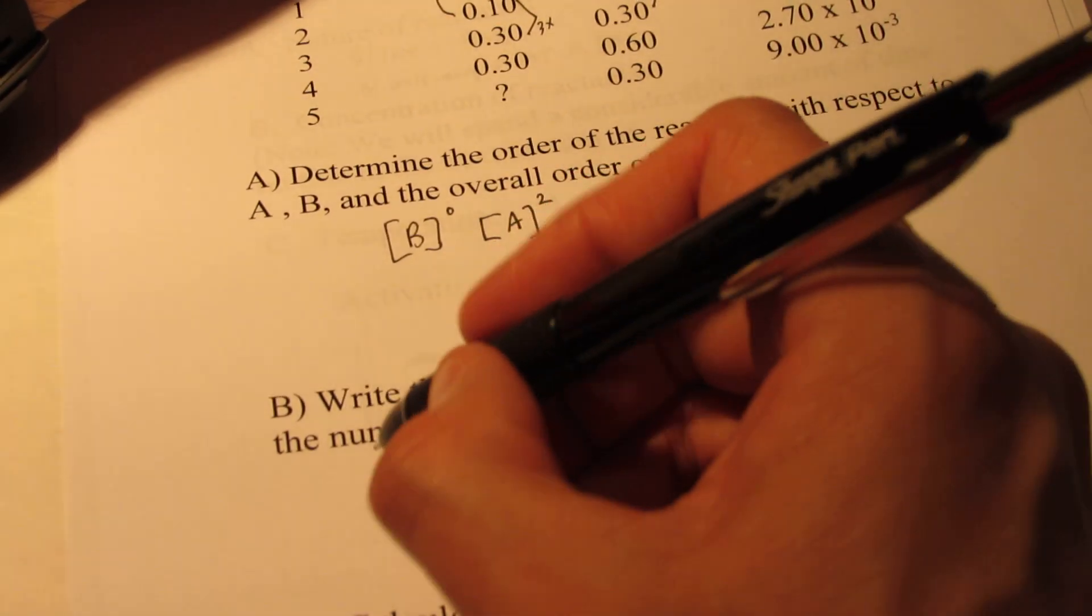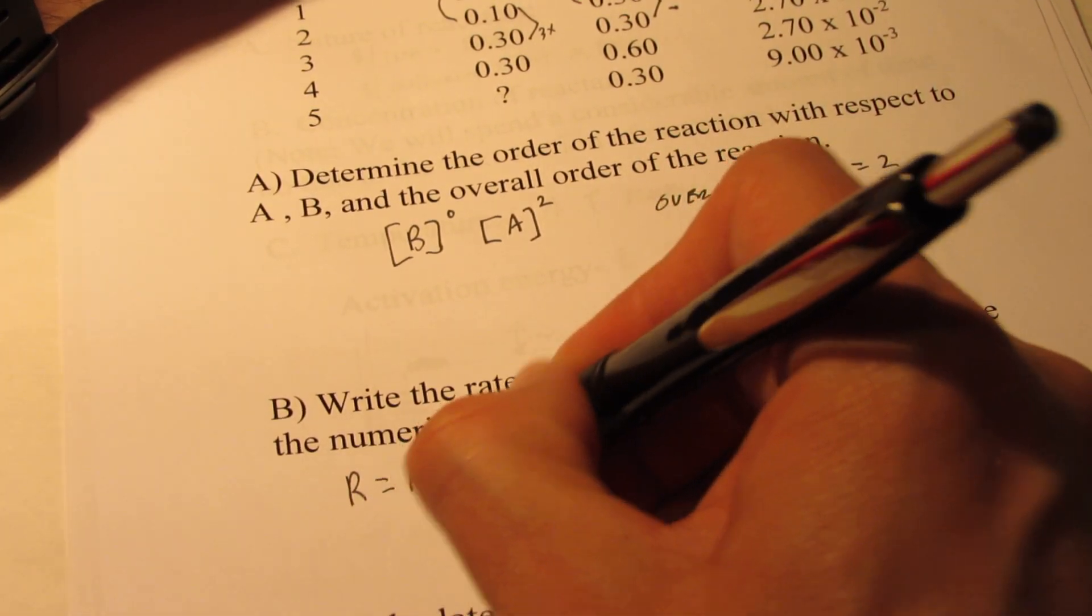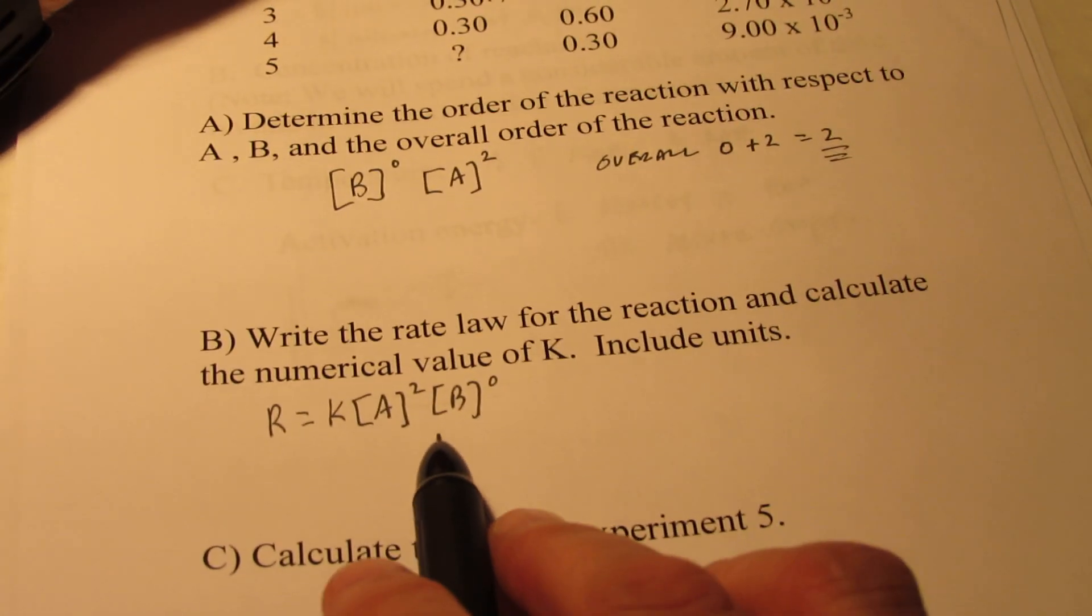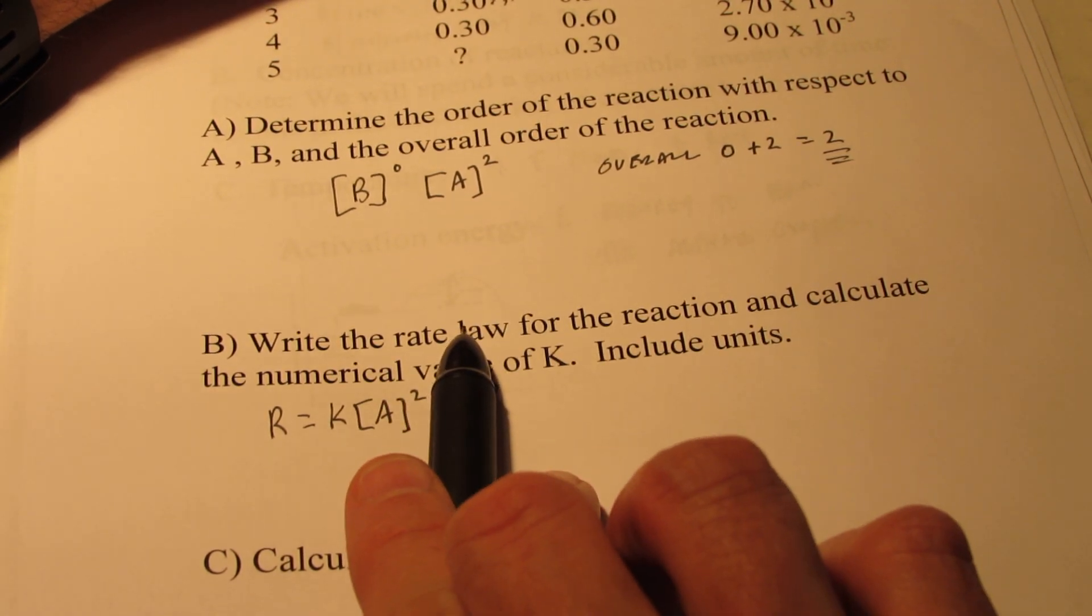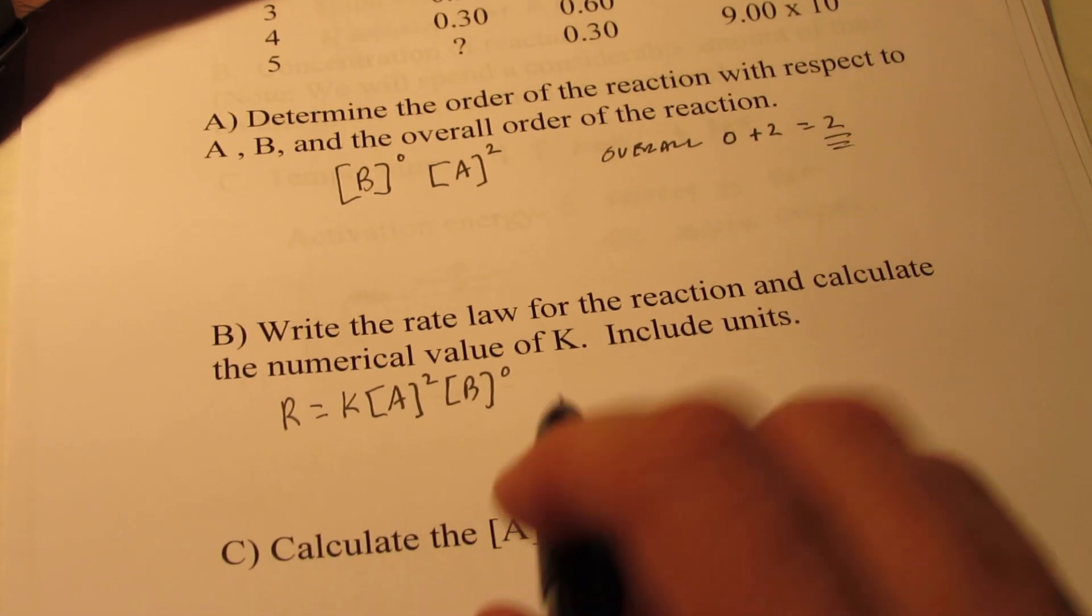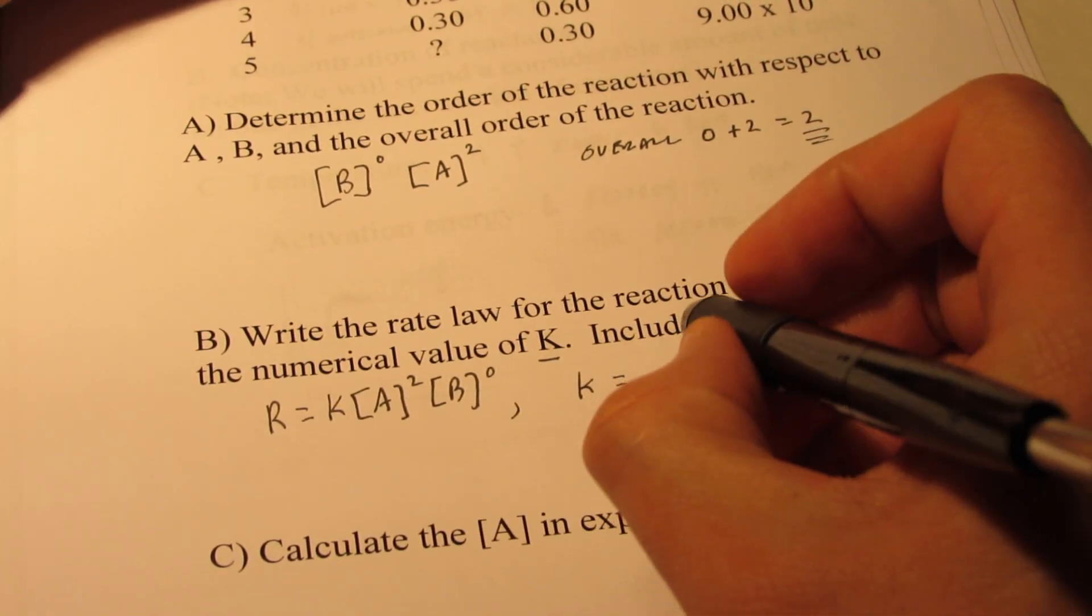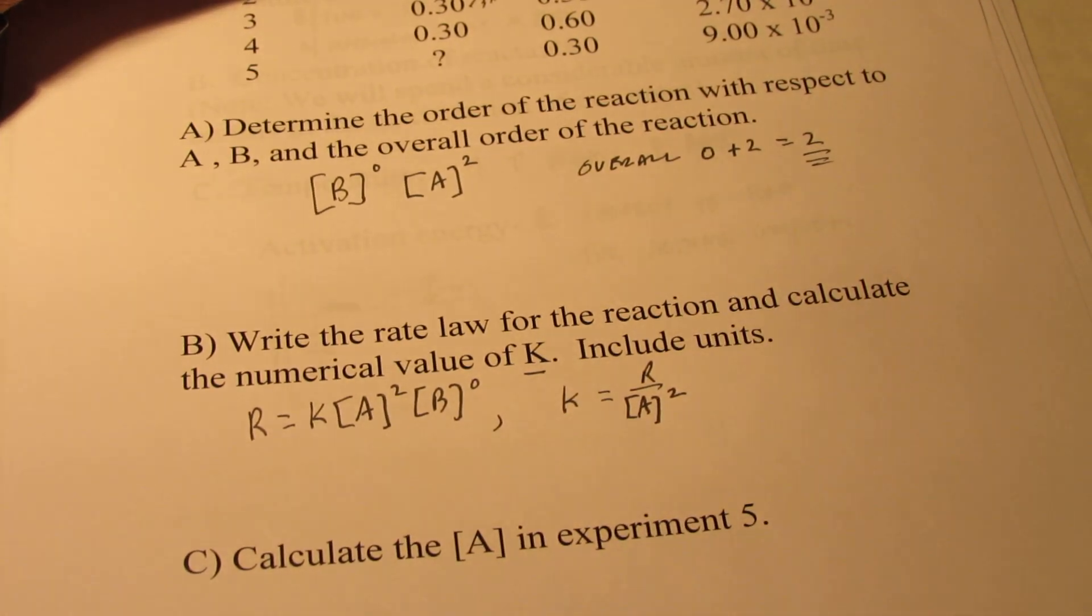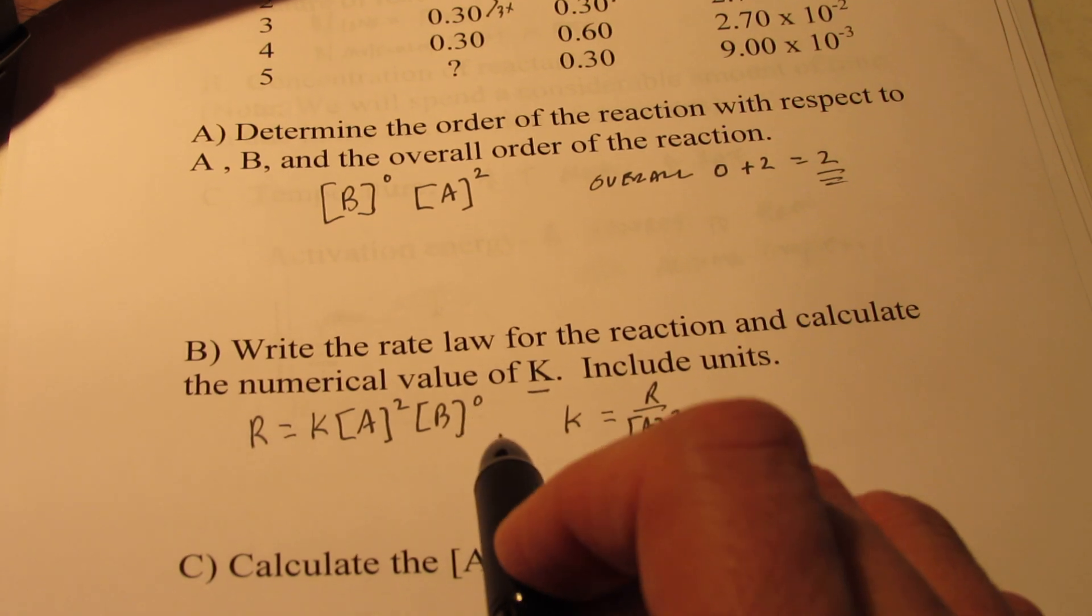Let's write the rate law for the reaction. The rate law is R equals K times A squared and B to the zero power. Now you math-minded kids know that since B is to the zero power, I could just as easily have left that off because anything to the zero power is one. Now I want to find the value of K. So let's solve this for K. Wouldn't K be equal to R over the concentration of A squared? Once again, we'll leave B out because B is to the zero power and that just becomes one.